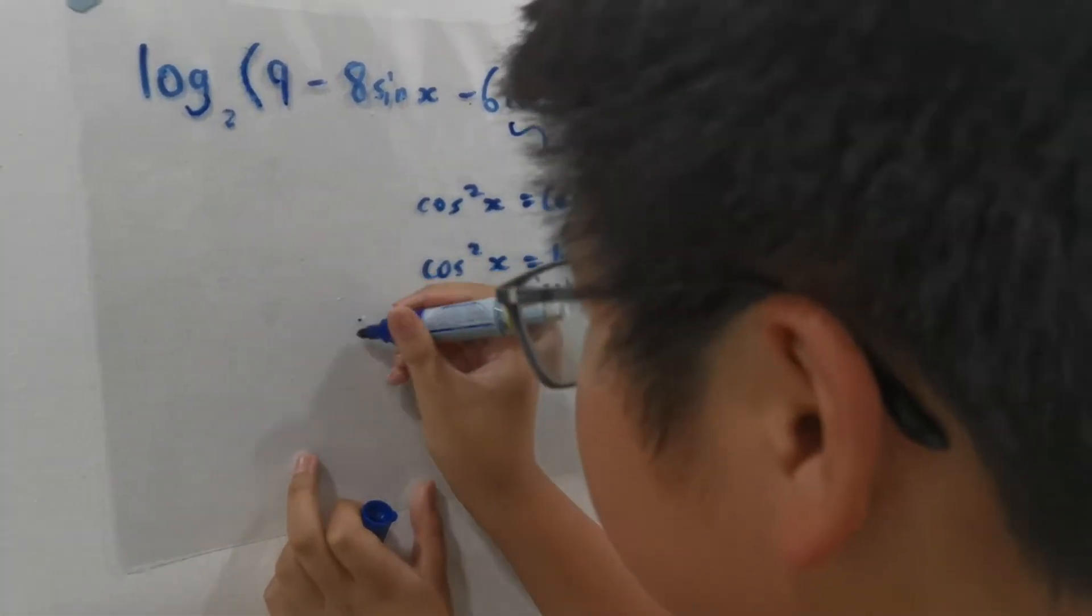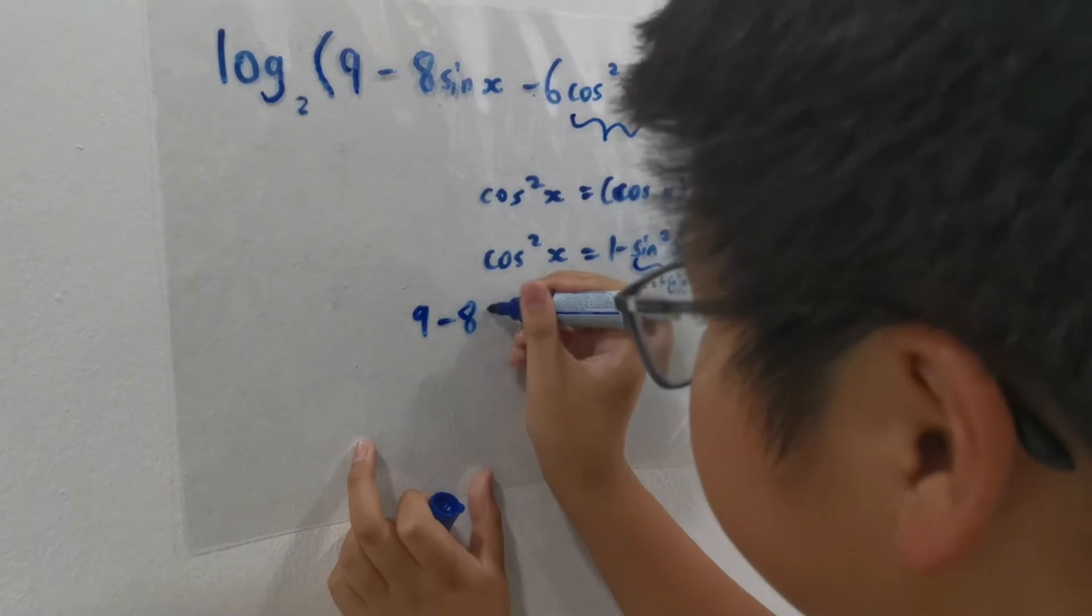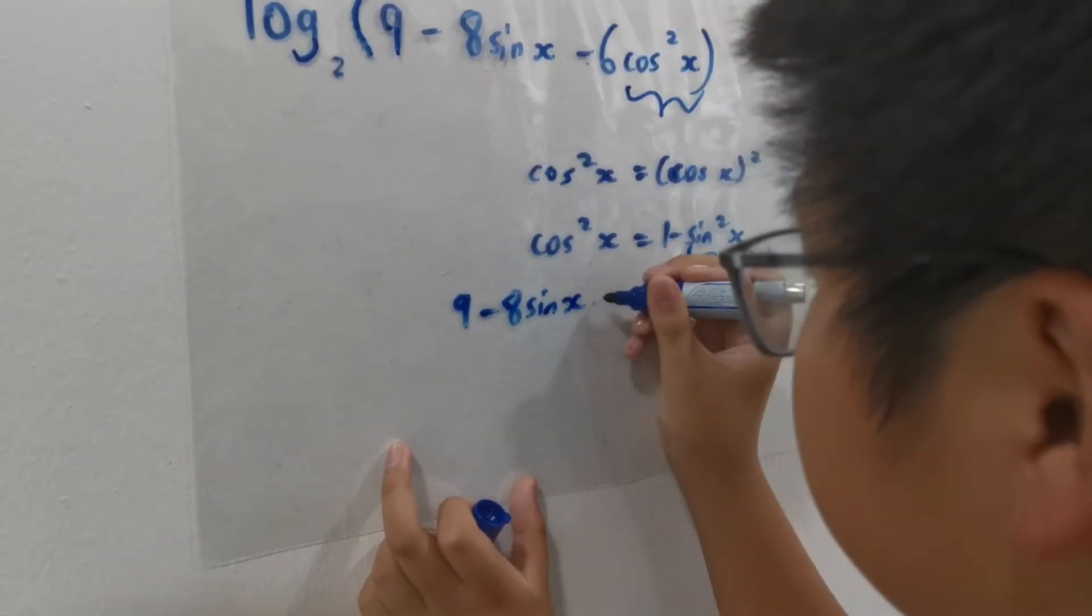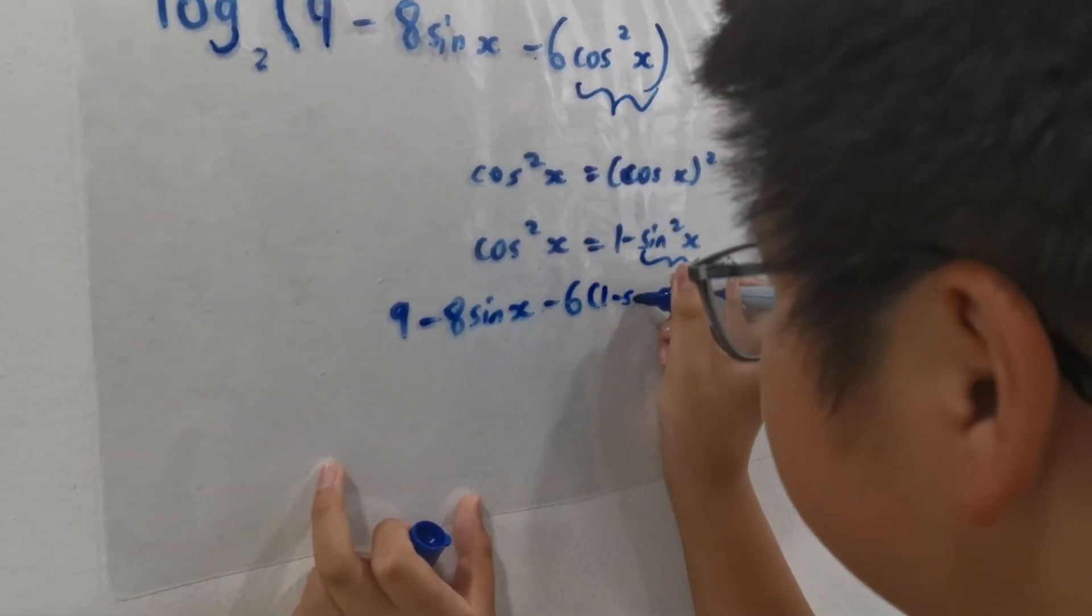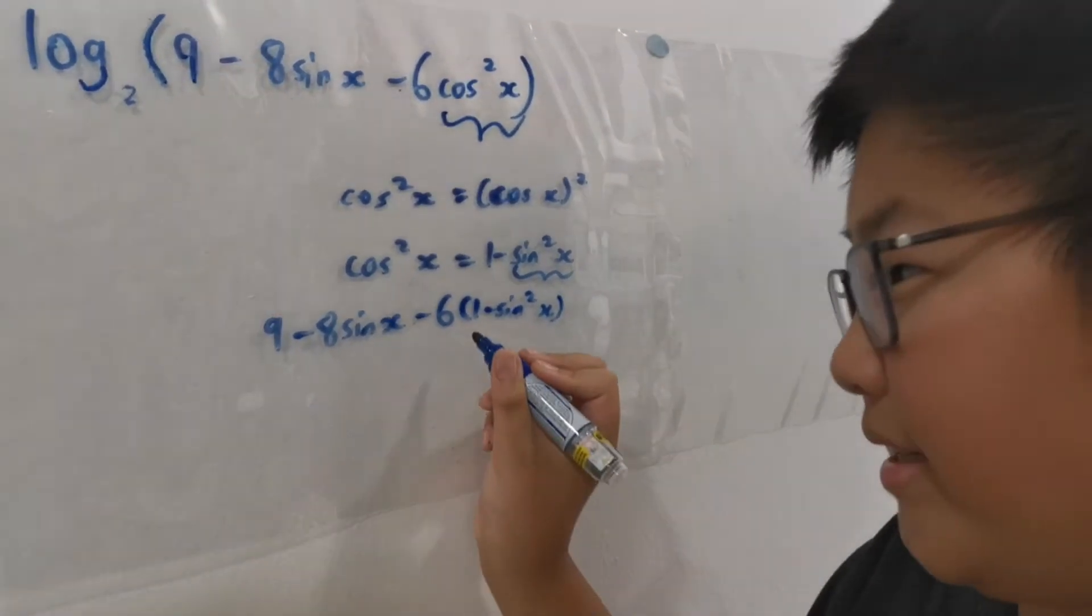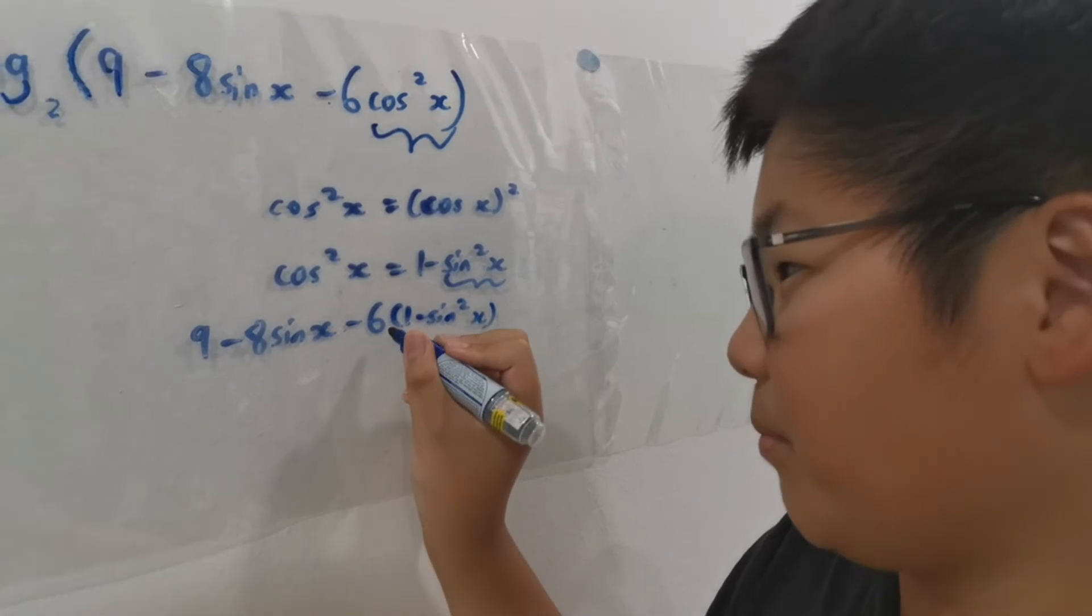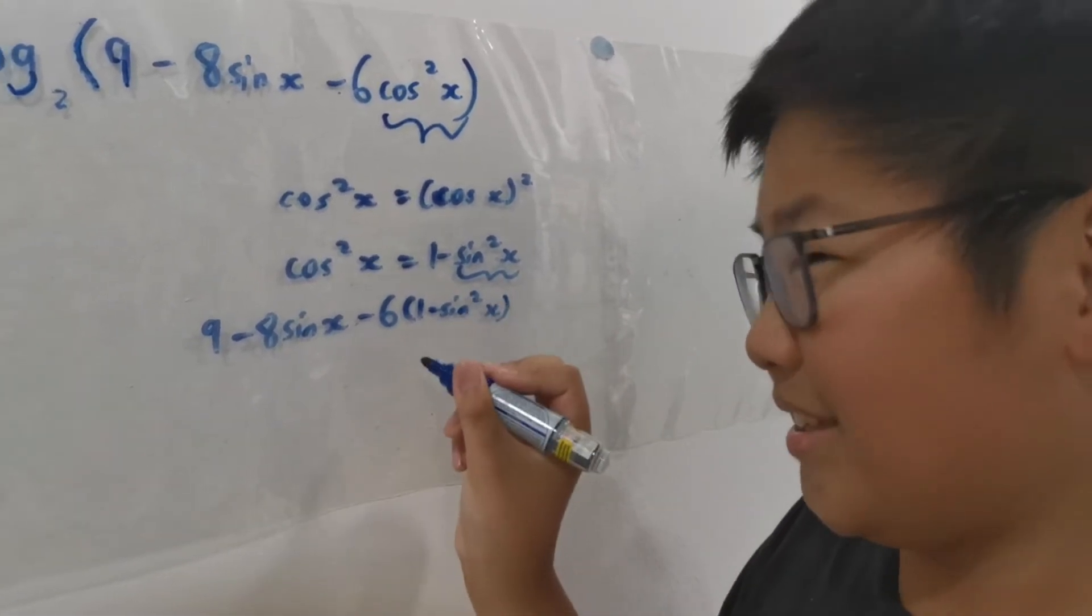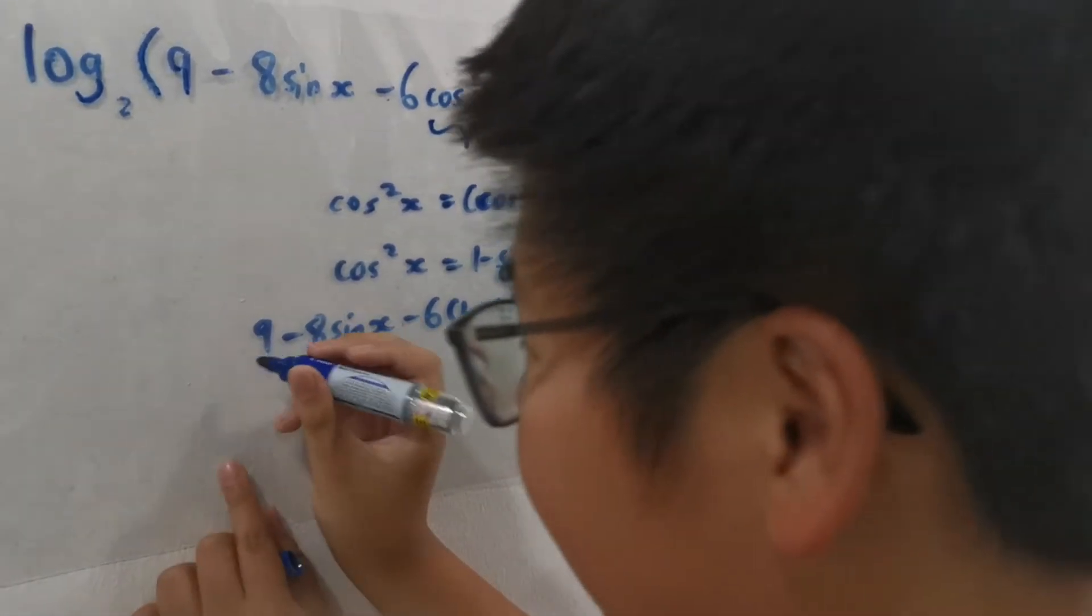When you're using parentheses, multiply by this number. Since there's a negative sign, flip all the signs in the parentheses.